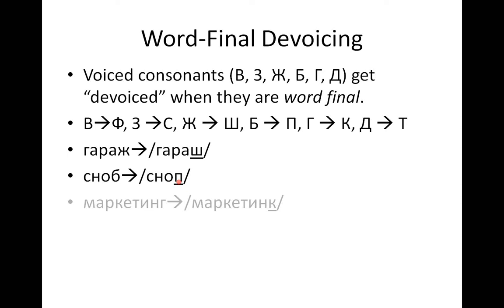One final example. In this calque from English for the word marketing, we have it written with the letter G at the end, the voiced consonant G. But when we pronounce this word correctly, we end up saying маркетинк, with a very distinct K sound. Once again, we have voiced consonants - V, Z, Ж, B, G, D - all of these get transformed into their unvoiced consonant pair.